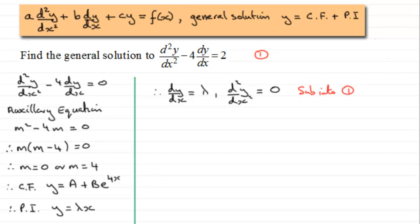And so what that gives us now is that this term here is 0. Then we've got minus 4 times dy/dx. So we've got -4λ = 2. And if we divide both sides by minus 4, λ = -2/4 or -1/2.